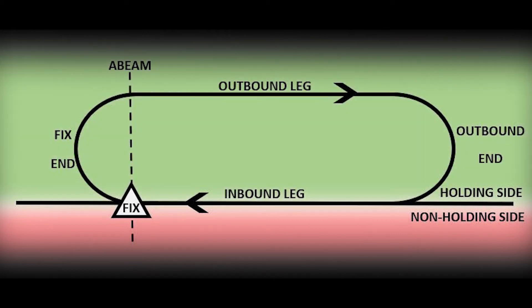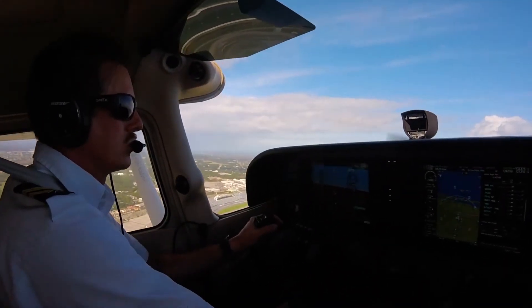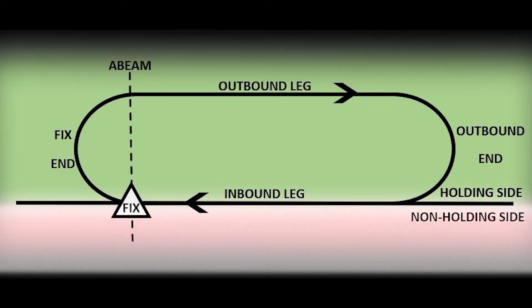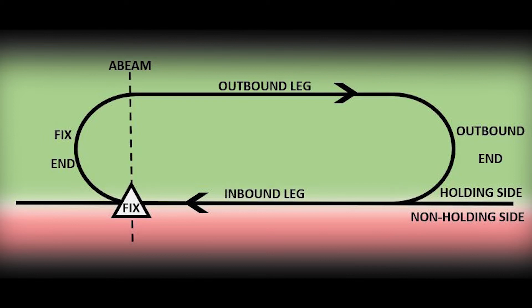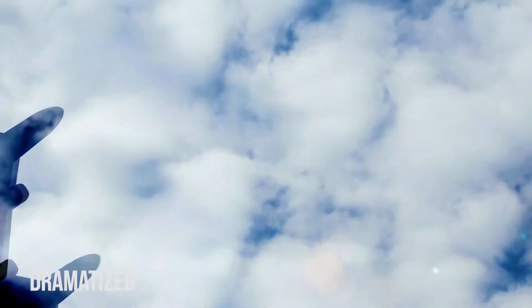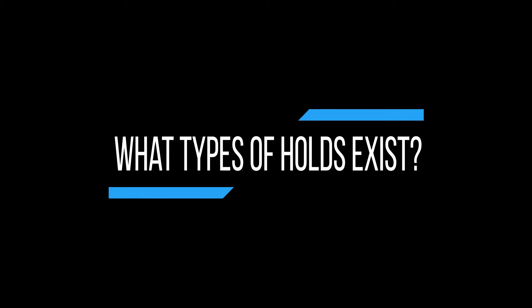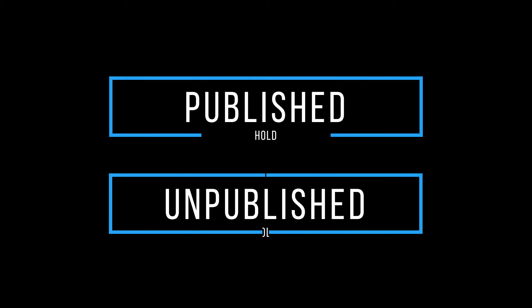The holding side of a hold is where the airplane will be during the hold. This gives the plane holding protection from other aircraft that may pass by. The non-holding side — the side opposite to where the hold is being conducted — should not be entered by the holding aircraft, as they risk crossing another aircraft's flight path and possible safety risks.